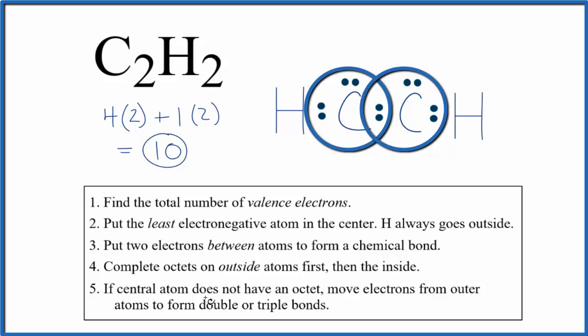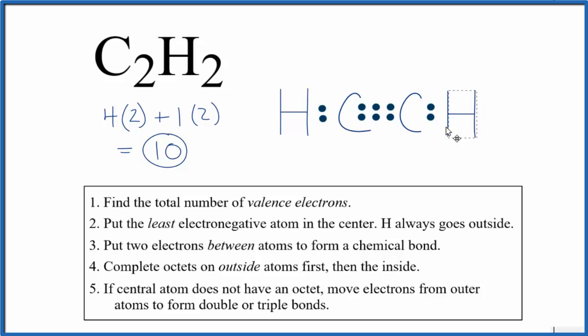What we can do is, if the central atom does not have an octet, we can move electrons to form a double or a triple bond. Let's do that. Let's move these two down here. And now this carbon has 8, and this has 6. So we're doing better. Let's move this pair down as well. So now each carbon has 8. Each hydrogen has 2. We've only used 10 valence electrons.